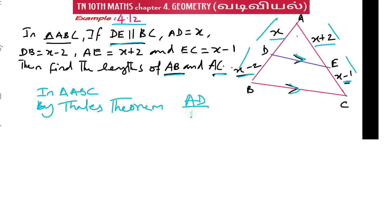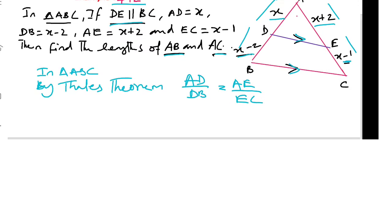AD by DB equal to AE by EC. Then AD is x centimeter, DB is x minus 2, AE is x plus 2, and EC is x minus 1.